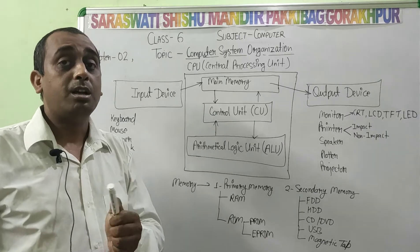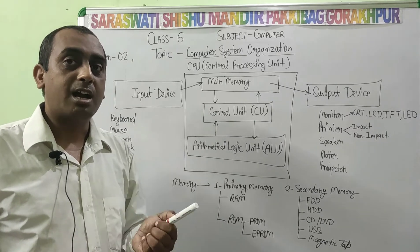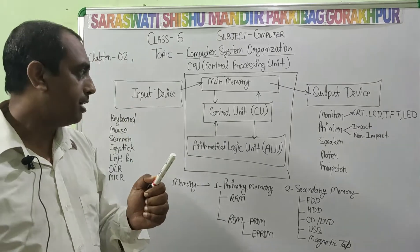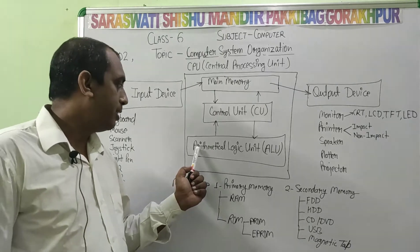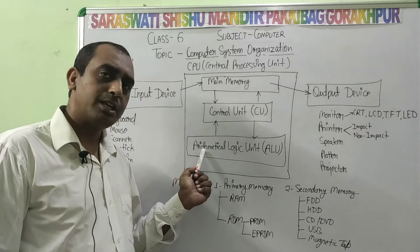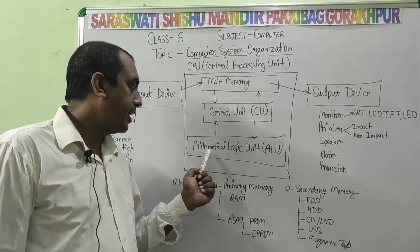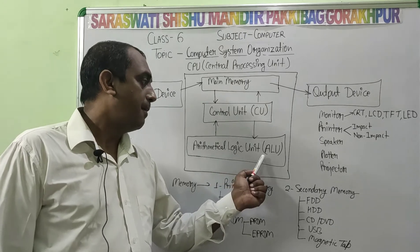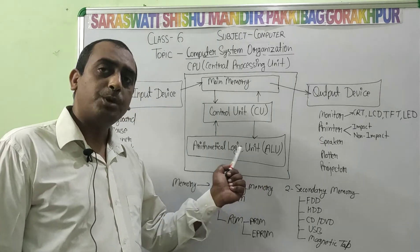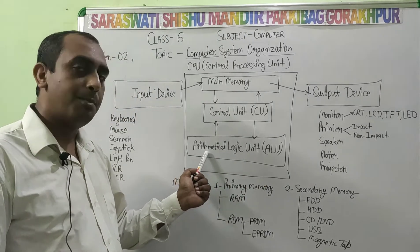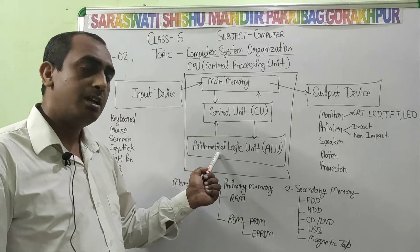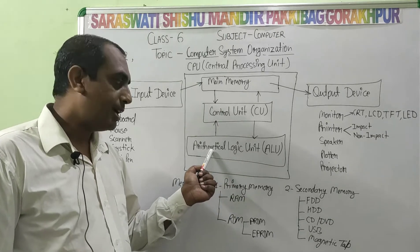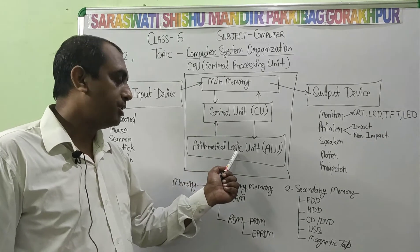Computer performs two types of calculations. First is arithmetic, and second is logical. So the computer calculates two types of calculations — mathematical questions and logical operations.